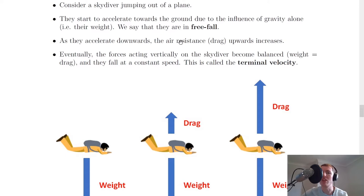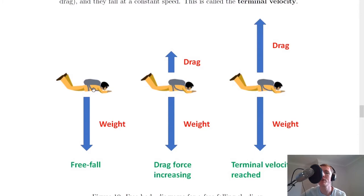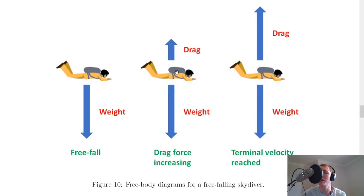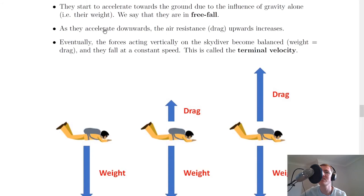Going back to the notes, let's break it into parts. As the skydiver accelerates downwards, the air resistance or drag upwards increases — that's because the faster the object moves, the more drag it experiences. Looking at the diagram, we start with the skydiver in free fall: as soon as they jump out of the plane they only experience weight downwards. Then as they increase in speed, drag starts increasing. As they accelerate downwards, the air resistance or drag upwards increases.